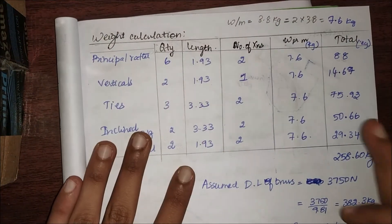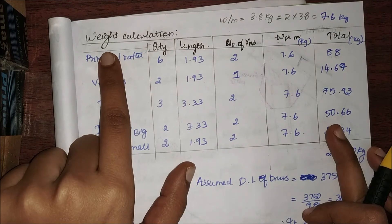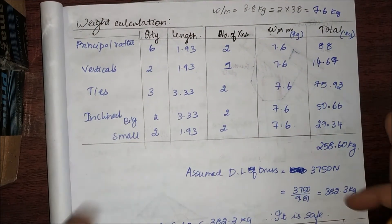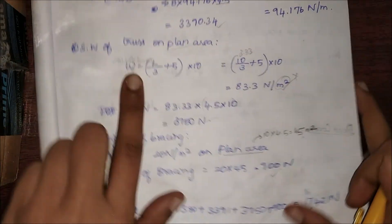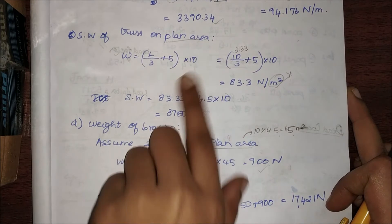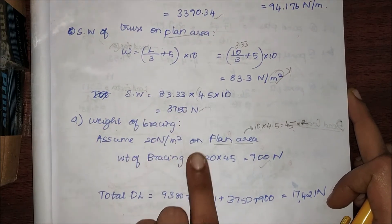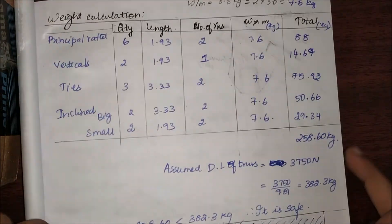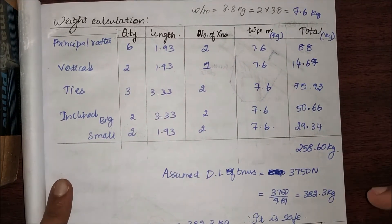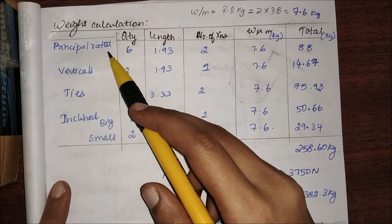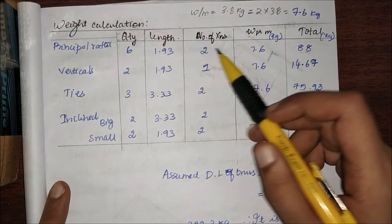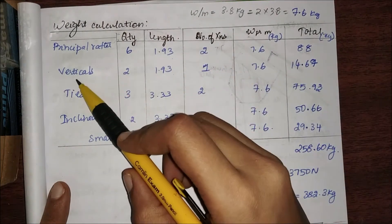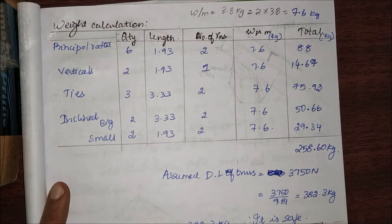With this we come to the end. We just have to make one more quick check: the weight calculation of the given member. Because we assumed the weight when we calculated the dead load for the rafter. We assumed some self-weight on the plan area and the weight of bracing, so we have to make sure the structure is safe even under the assumed loading. Coming to the principal rafter, this is very simple: just finding the quantity, length, and number of sections used.